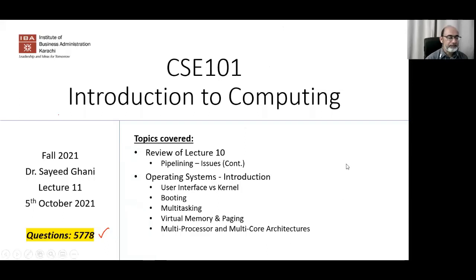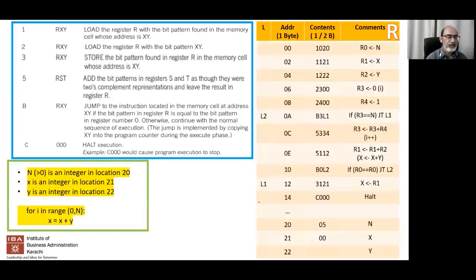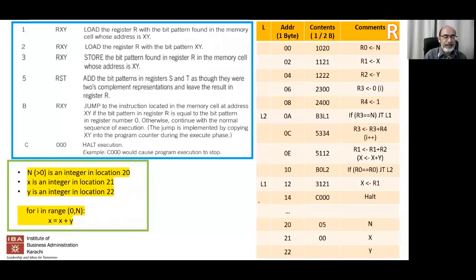In the last lecture we looked at a particular example of machine code where we were supposed to do a very simple instruction. At the high level in Python it would simply be x = x + y. We saw how that could be encoded at the machine level, and even though in Python it looks very simple, at the machine level it comprises quite a few instructions.